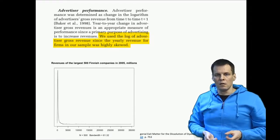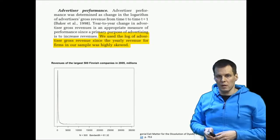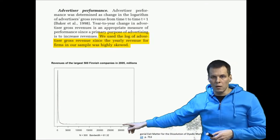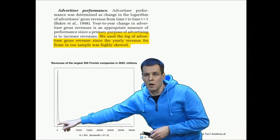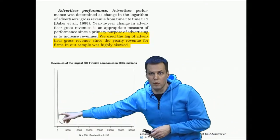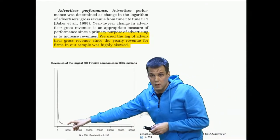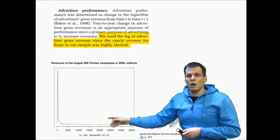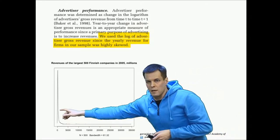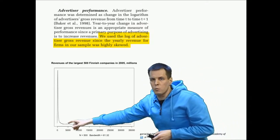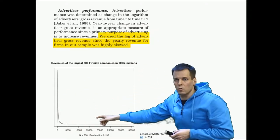So these are the data from the largest 500 Finnish companies in 2005, the revenues for those companies. So we have one very large company here, then some companies here and most are here around a few hundred million euros of revenue. We have a couple of billion euro companies and most companies are in the hundreds of millions range. So this distribution is highly skewed. It means that there is this long tail here. So we have most observations are clustered here and then we have some that go to this long tail here.